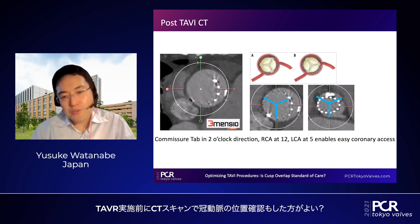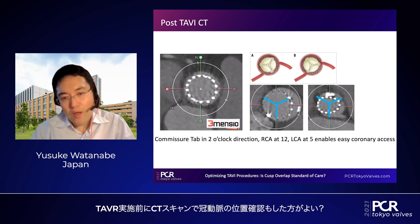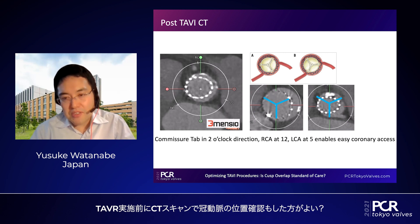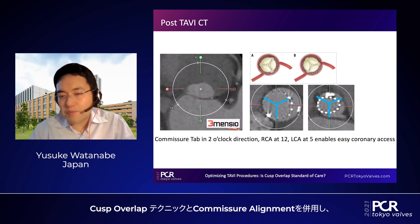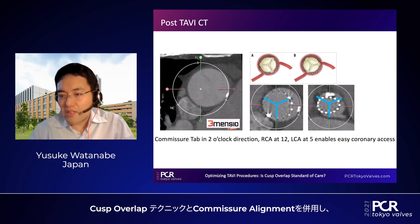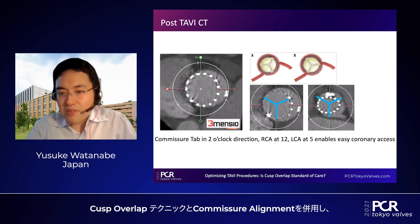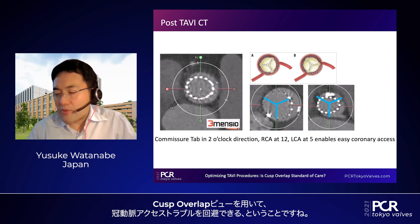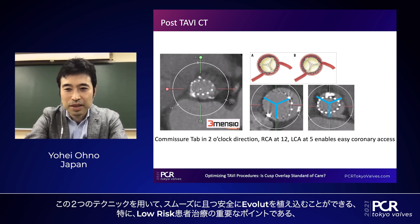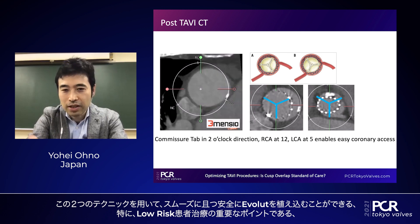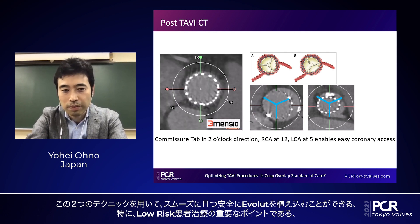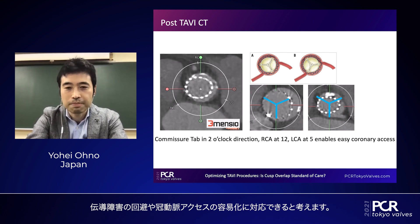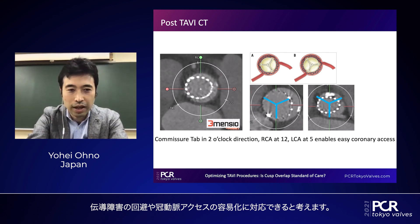We should check the coronary artery position before TAVI using CT scan. That is correct — going back to the cusp overlapping view, the combination of cusp overlapping technique and correct commissure alignment allows us to avoid difficulty with coronary access. These two techniques together facilitate safer Evolut implantation, especially for lower-risk patients. Very important topics to avoid conduction disturbance and make coronary access easier.